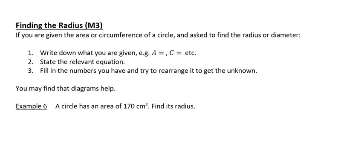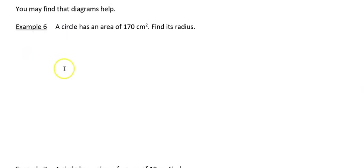In these examples, what we're going to do is a reverse process - where you're given the area or the circumference and asked to work back and find the radius or maybe the diameter. A circle has an area of 170 centimeters squared - find its radius. It mentions circle and area, so the sensible thing to do is write down the formula, which is πR².